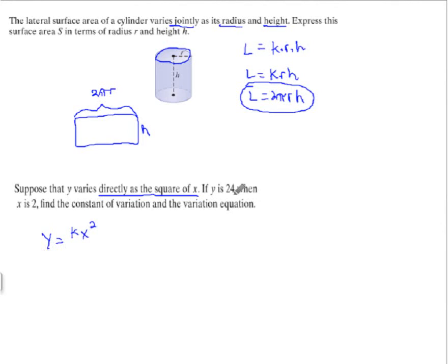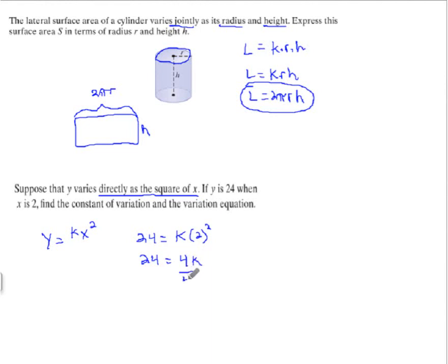If y is 24 when x is 2, we plug those in: 24 is equal to k times 2 squared. We get 24 is equal to 4 times k, because 2 squared is 4. Divide each side by 4, and we get k = 6. So our constant of variation is 6.